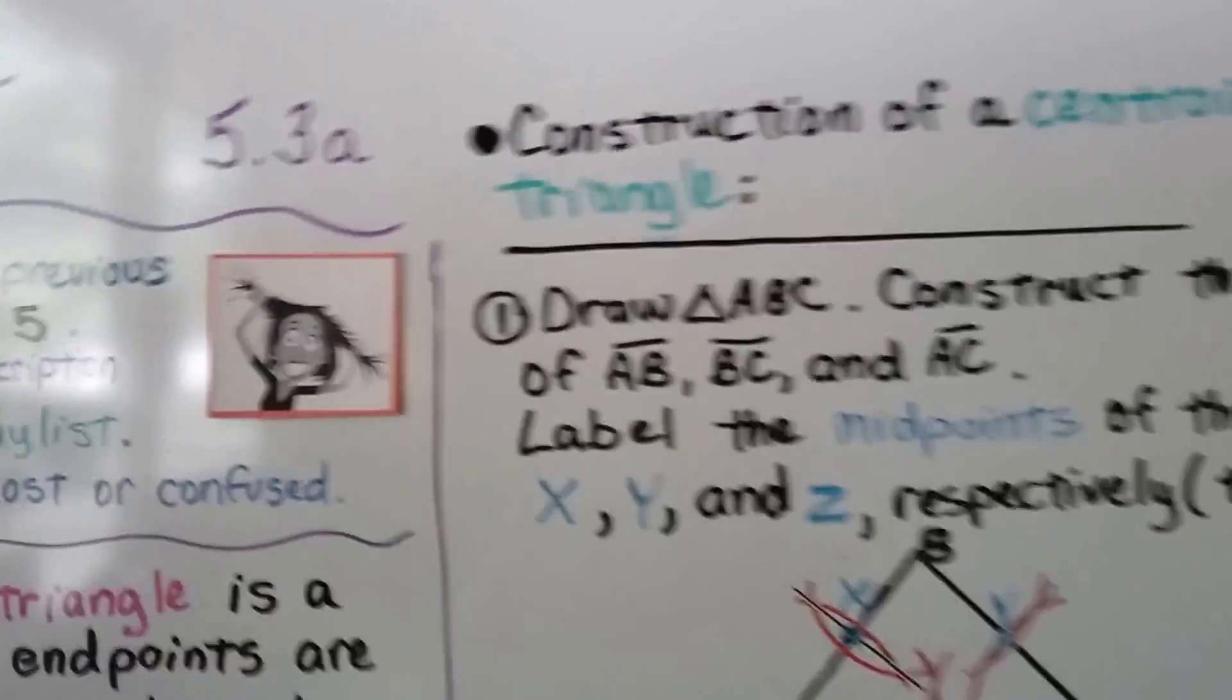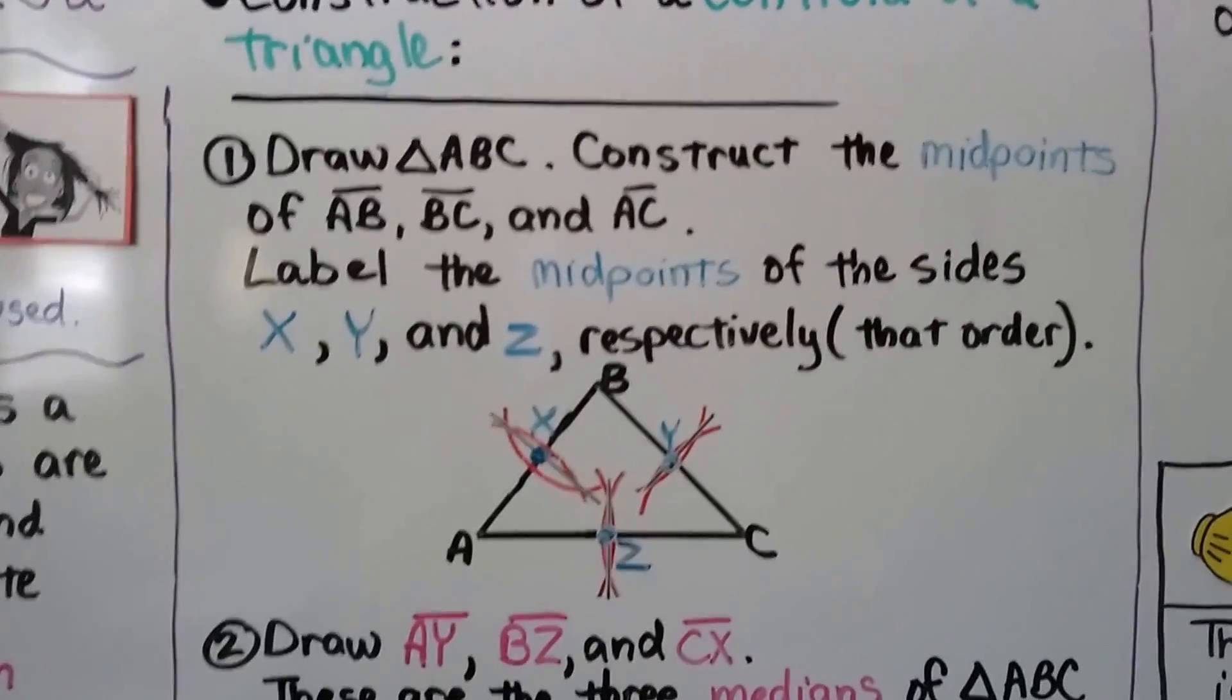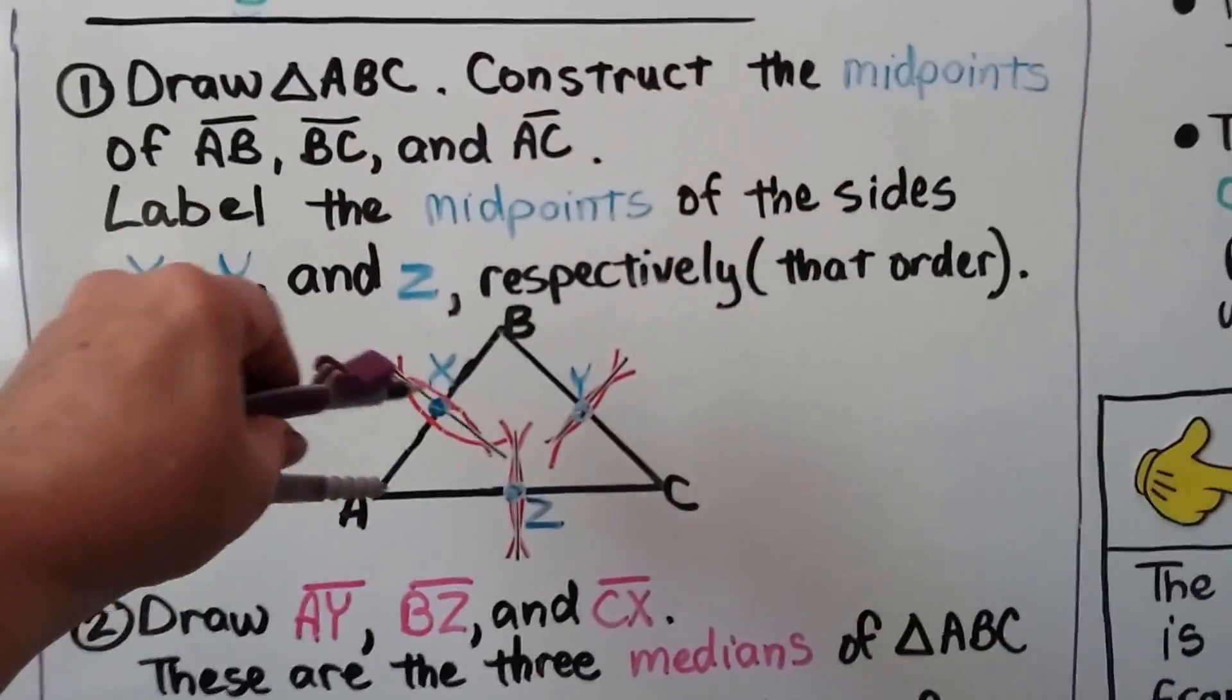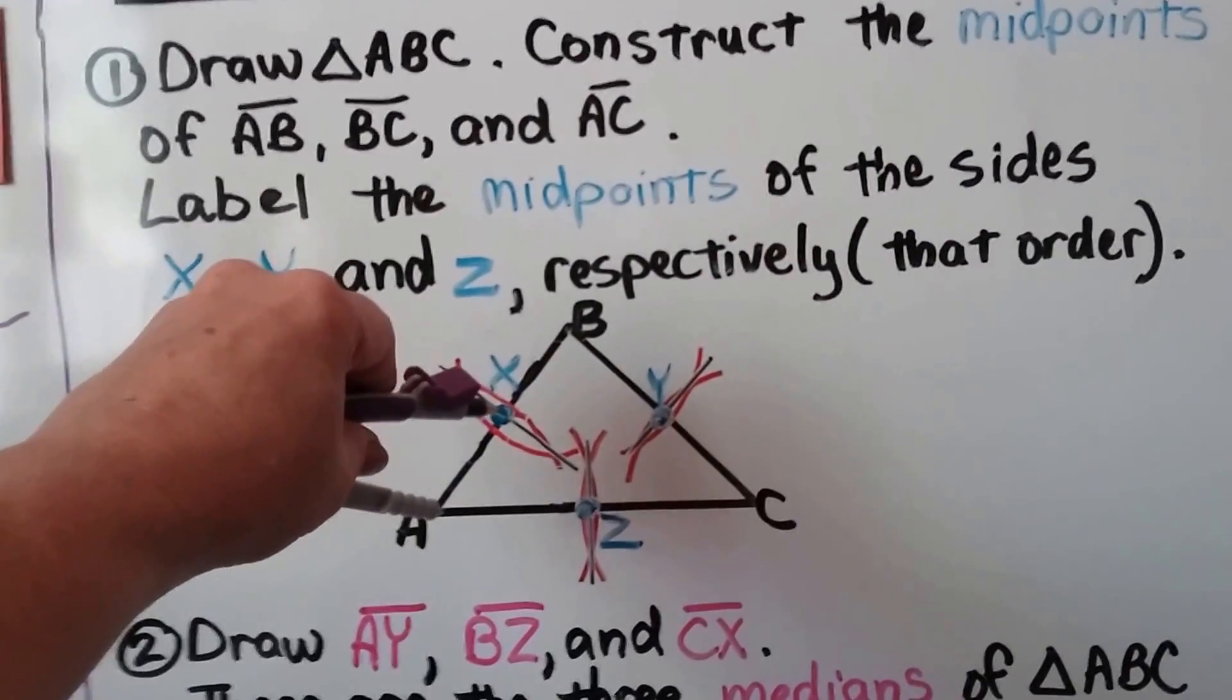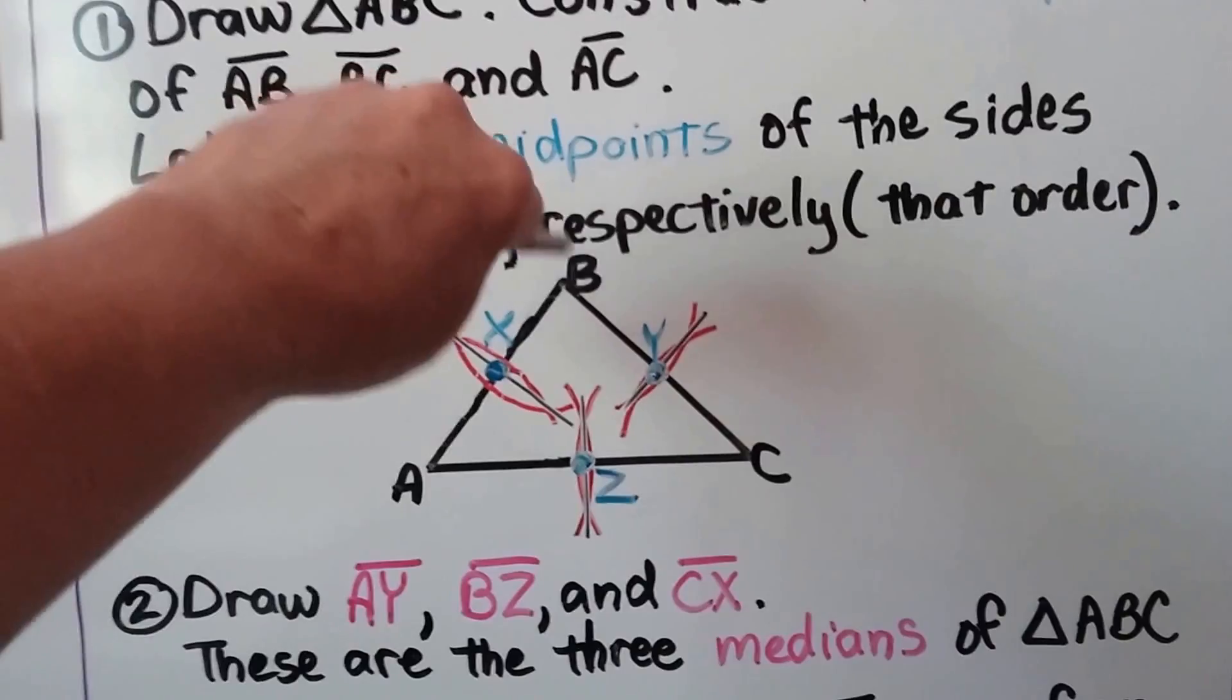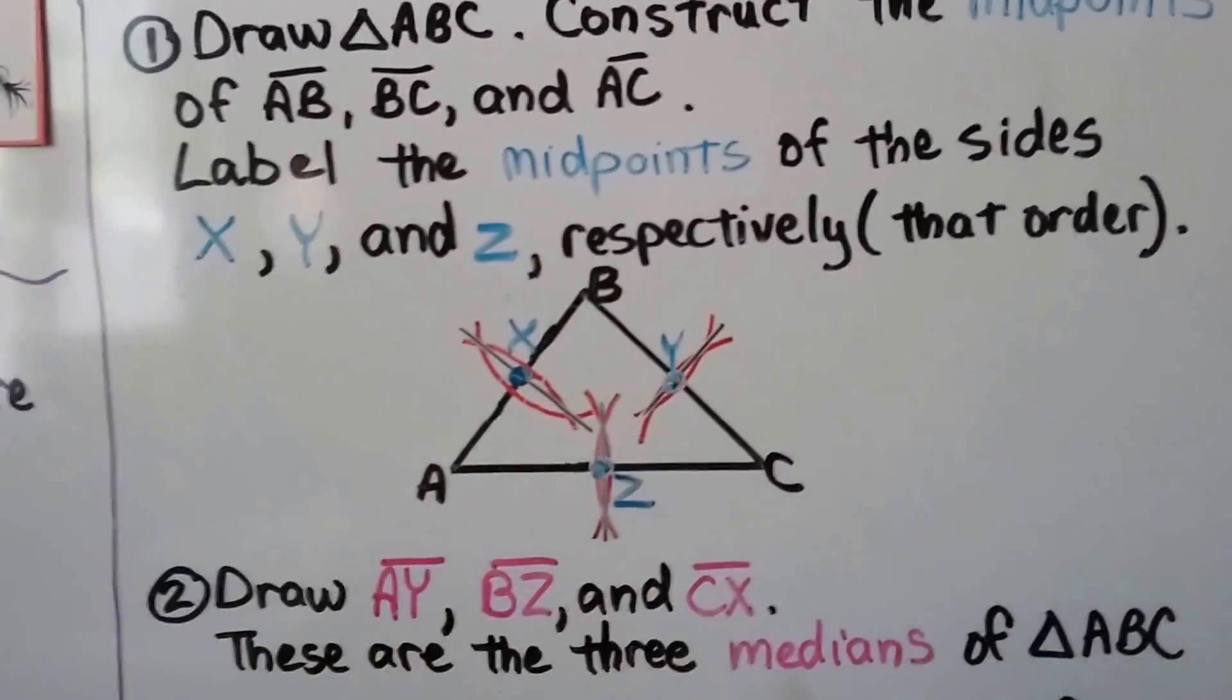For the construction of a centroid of a triangle, we draw a triangle ABC and construct the midpoints of segments AB, BC, and AC. If you remember how to do that, we take the point of the compass and we keep it at the same space measure. And we make an arc with the point on A. Then we put the point on B and we make another arc. And where they intersect, we draw a line. And where that line intersects AB, that's the midpoint. We do the same thing for AC and BC.